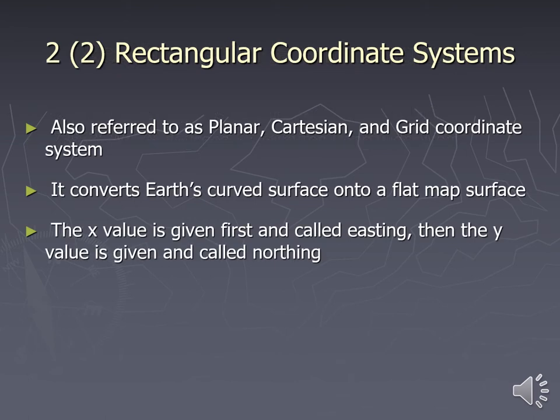Now let's talk about rectangular coordinate systems — this is really where the rubber hits the road. Rectangular coordinate systems are also known as planar, Cartesian, or grid coordinate systems. They all assume that you have converted the earth's curved surface onto a flat map. The X is given first and is called an easting, and then the Y is given a value called the northing.